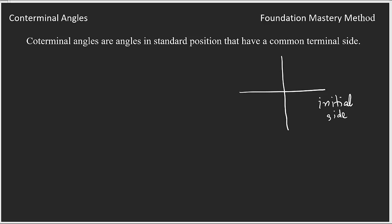Coterminal angles are angles in standard position that have a common terminal side. To understand this, suppose I have the quadrant here and this is my initial side. Some angle can be formed, suppose I'm coming to this.